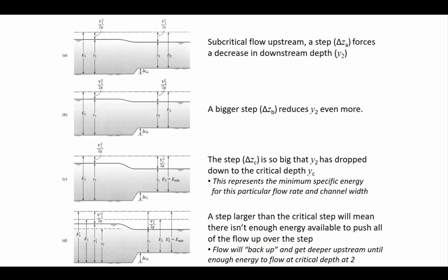We're going to spend more time next week talking about chokes. There are different ways to choke flow besides increasing the step — you can also make a channel narrower. For example, if you put a bridge over a river and add a pier to support it, you're effectively making the channel narrower, reducing the flow area. One of the things carefully analyzed in hydraulic design of bridges is whether a pier causes choking upstream.